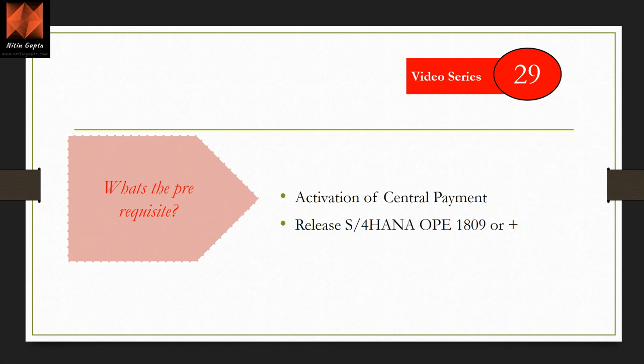The prerequisites are important. You have to activate Central Payment — in a normal CFIN scenario it does not work without it. It will only work for those company codes where Central Payment is activated. The minimum system release is S4 HANA on-premise 1809 or above, where Central Finance is up and running.